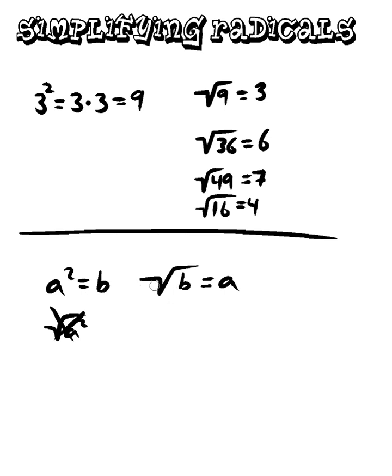Now we're going to learn how to actually go about making these various radicals simpler — how do we go about simplifying them? To do that, I'm going to move my screen over just a little bit and we're going to start by making a nice beautiful chart. Whenever you start one of these problems, the first thing you want to do is make this chart. It'll make your job a whole lot easier.